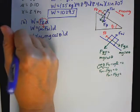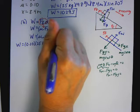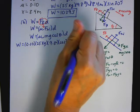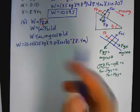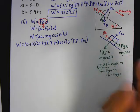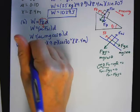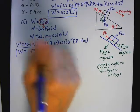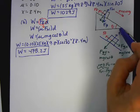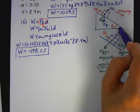Substituting values: 0.1 times 25 times 9.8 times cosine of 30 degrees times 8.4 meters. The frictional force acts in the opposite direction, so this work done by friction is negative. This is important for conservation of energy — the total energy at the top minus the work done by friction equals the energy at the bottom.